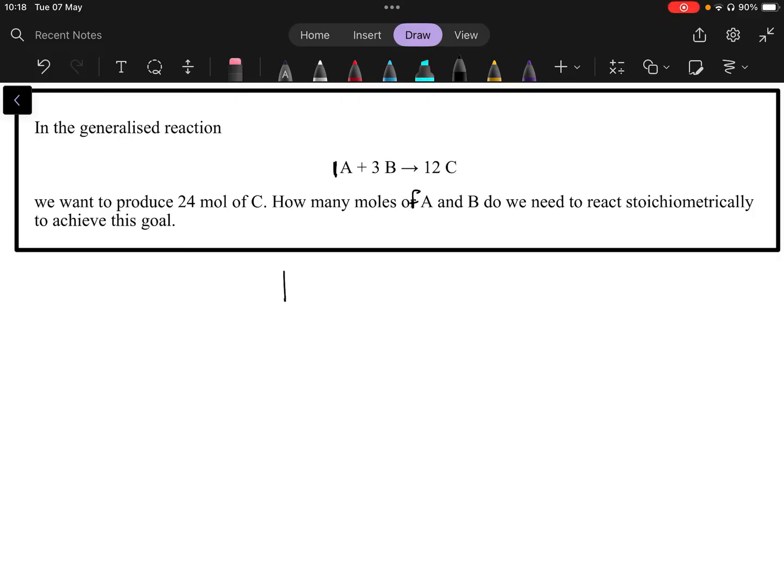Right, so what would you have normally done? So let's start by writing down 1A plus 3B gives 12C. Now this is a ratio that tells us 1 mole of A, 1 mole of A needs to react with 3 mole of B gives us 12 mole of C.